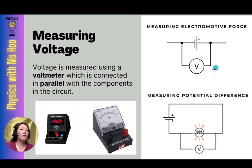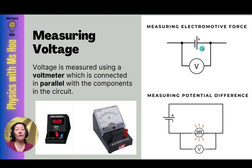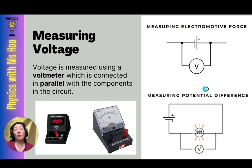You might think this diagram is showing only part of the circuit, but actually, this is all there is to it. This is the best way to get the actual value of the electromotive force of the dry cell — you don't connect it to a circuit. You put a voltmeter directly across the ends of the cell only. Why can't we put the voltmeter across the dry cell to measure the electromotive force when it's part of a complete circuit? Let's take a look at this in the next slide.